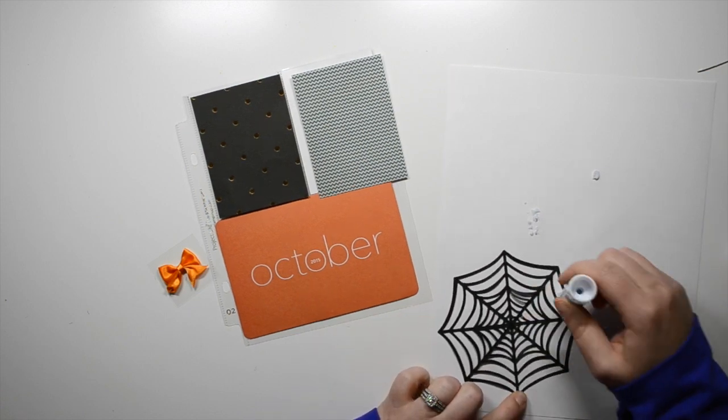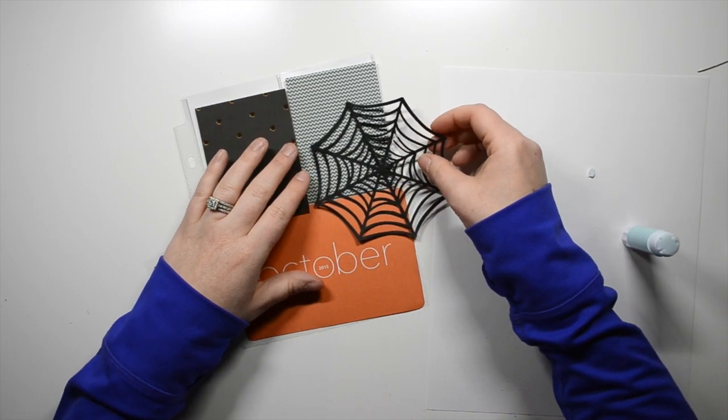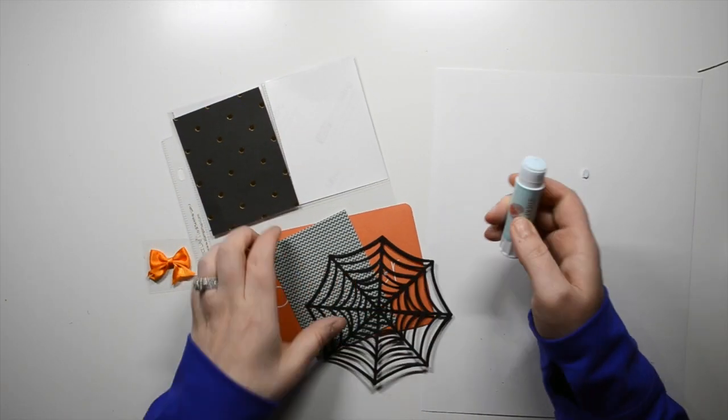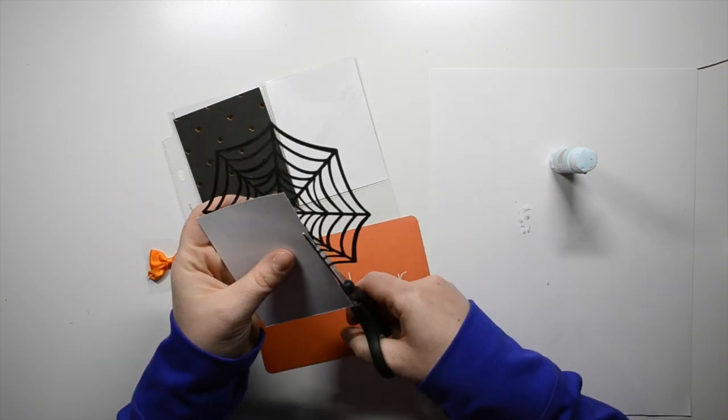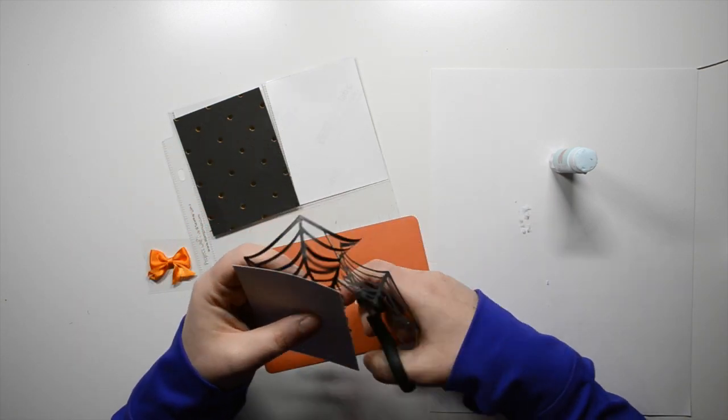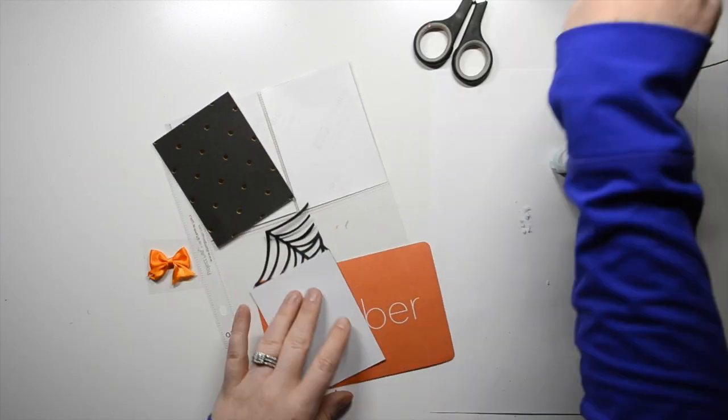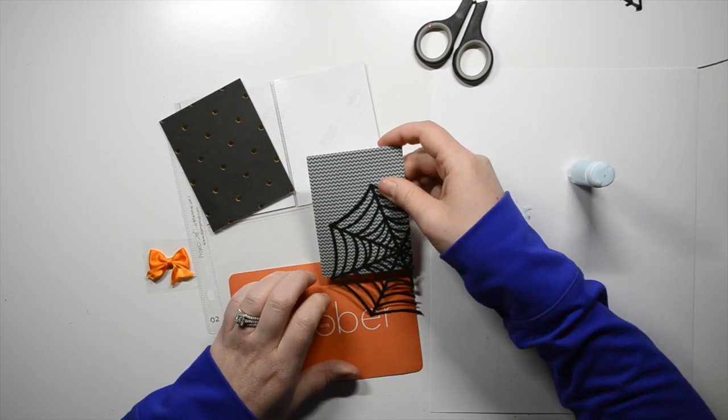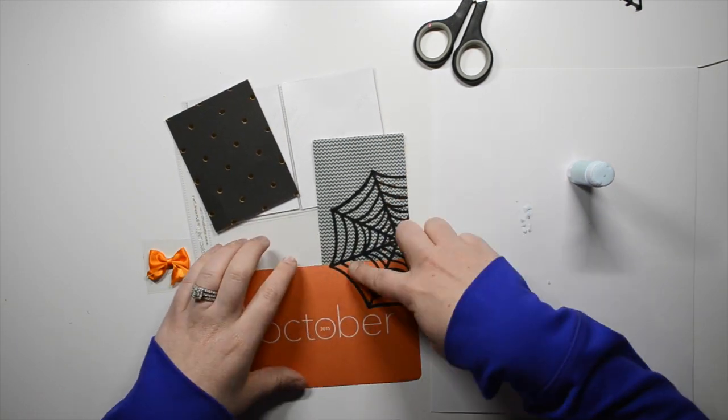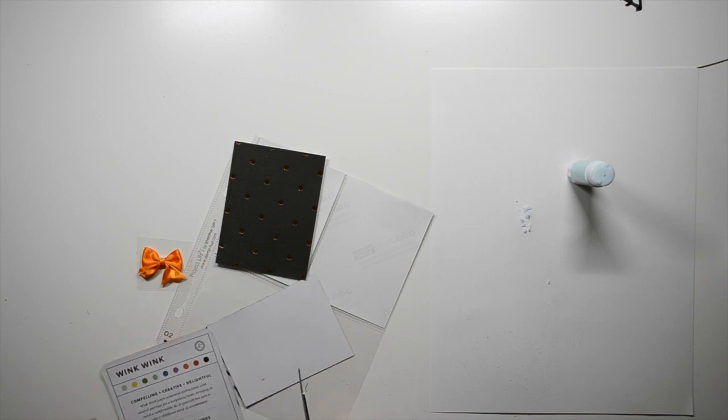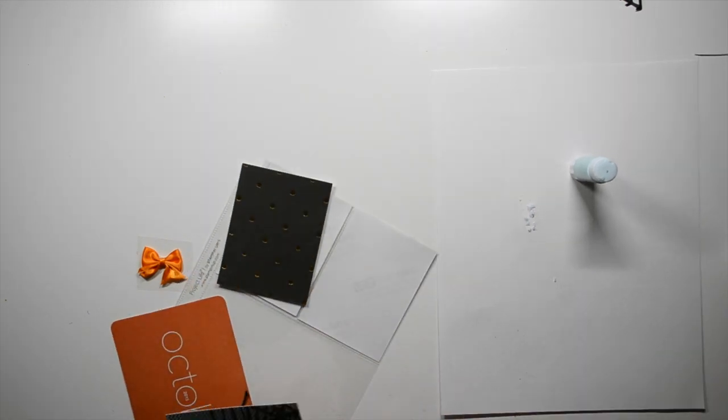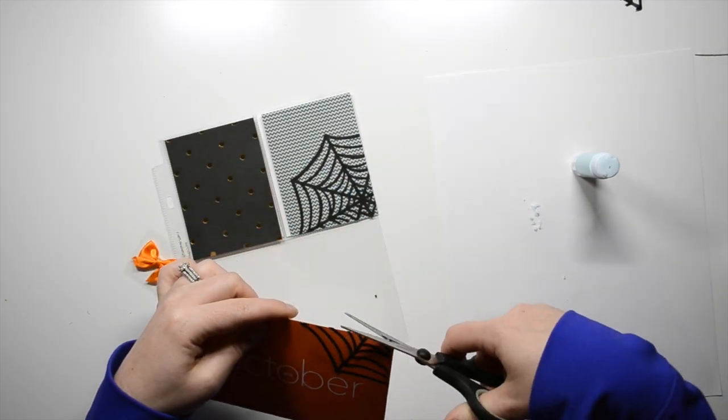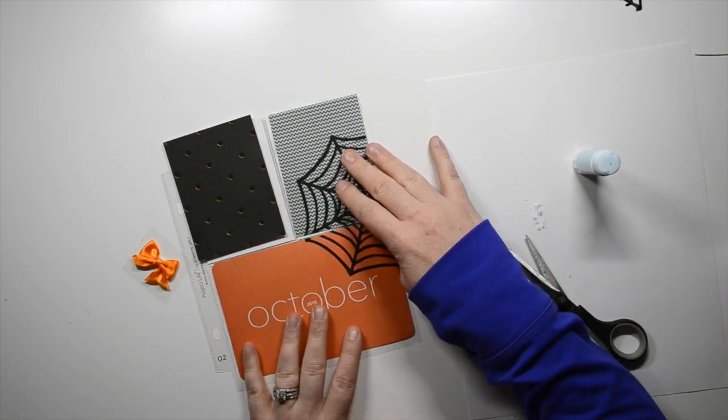So I'm using the Sticky Thumb glue stick to adhere down this spiderweb doily. That's from Michael's, and I'm spreading the doily across two cards, and it was a little bit trickier than I intended it to be. Definitely easier to put the glue on the card and not on the doily, and it does dry clear, so you aren't able to see the adhesive on the orange card.